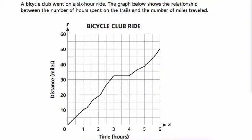All right, so let's start by just reading the problem together. We're told that a bicycle club went on a six-hour ride. And the graph below shows the relationship between the number of hours spent on the trails and the number of miles traveled.